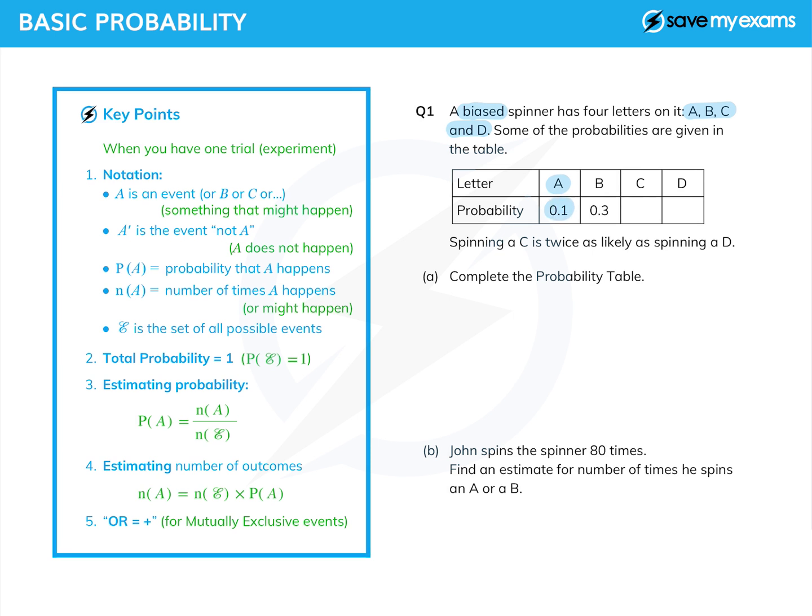And some of the probabilities are given in this table. So the probability of A is 0.1, the probability of B is 0.3. And then we're given one more piece of information, which is that spinning a C is twice as likely as spinning a D. And we're asked to complete the probability table.